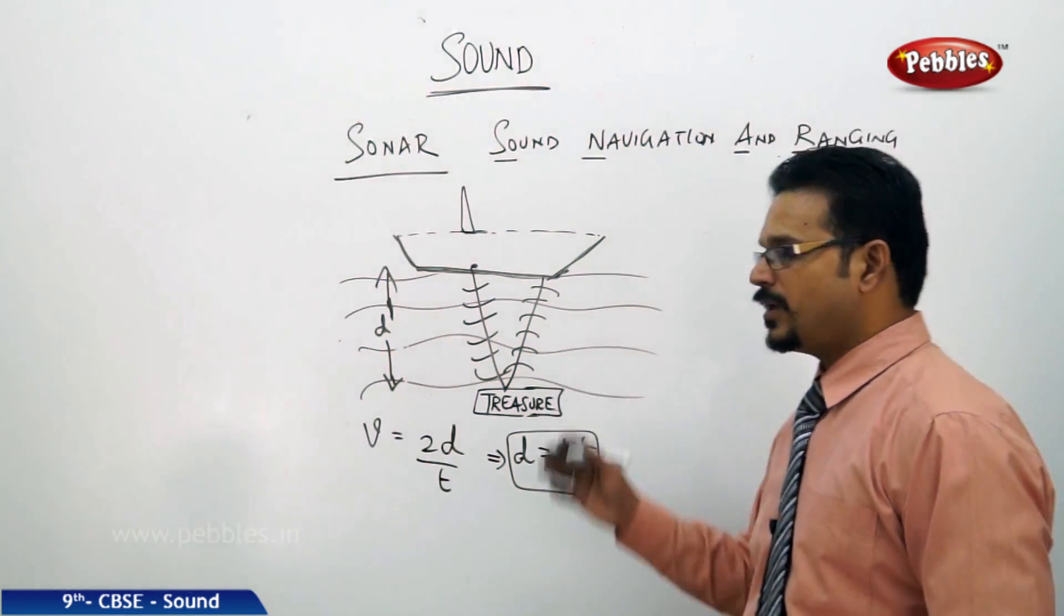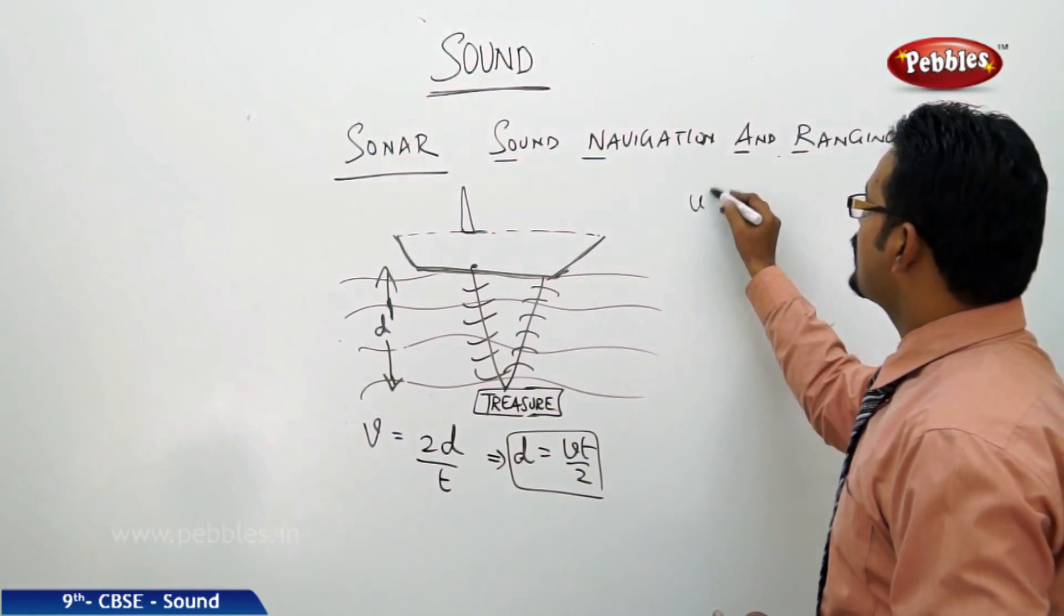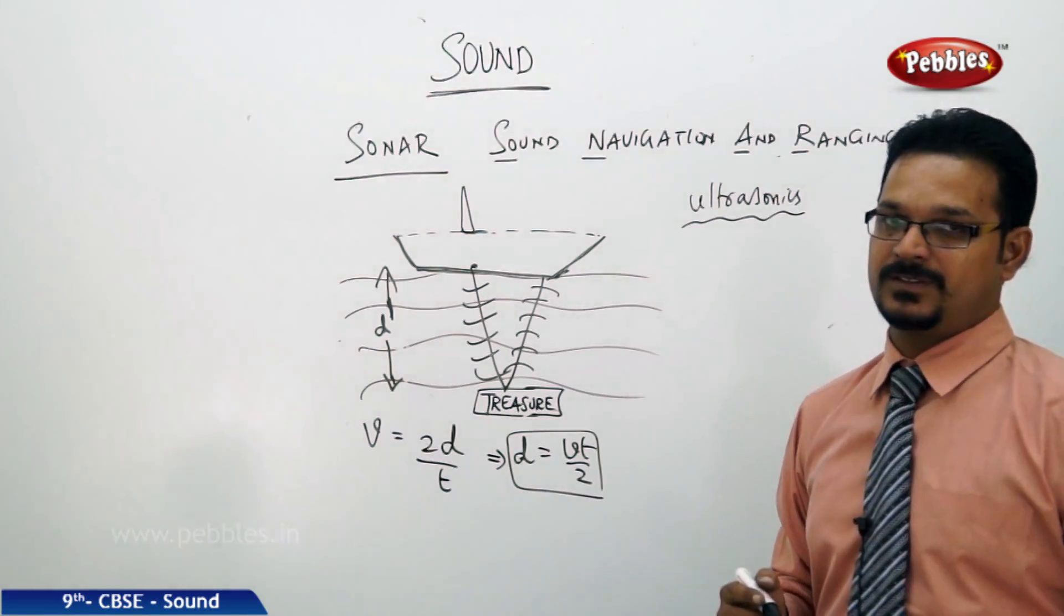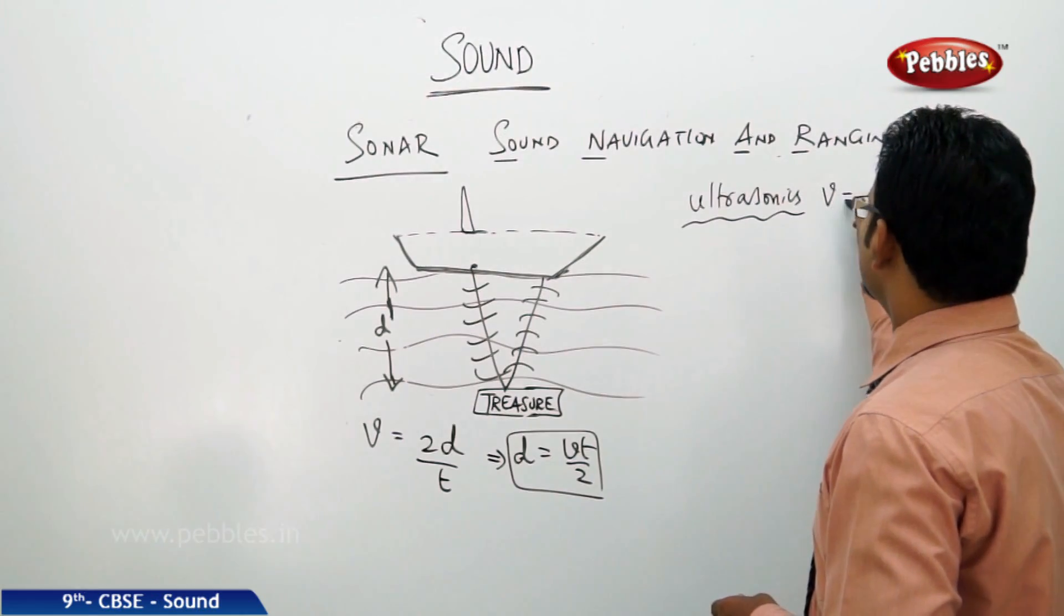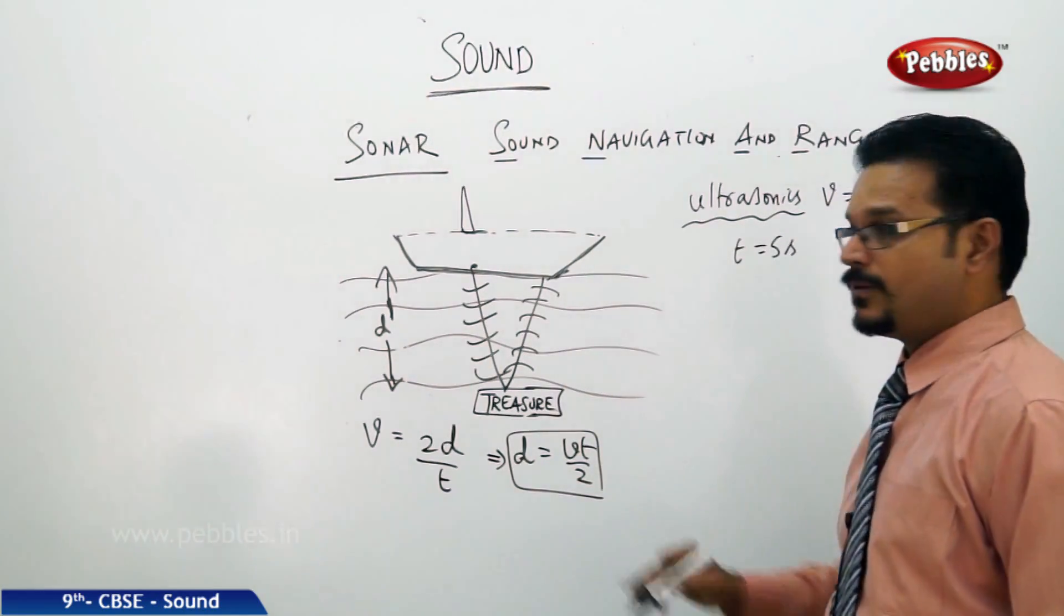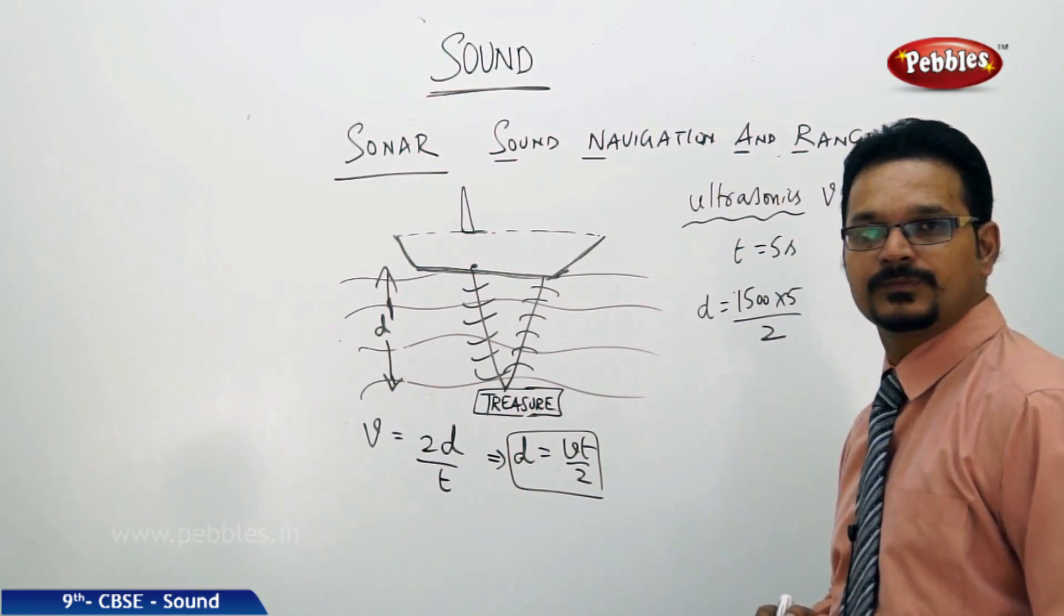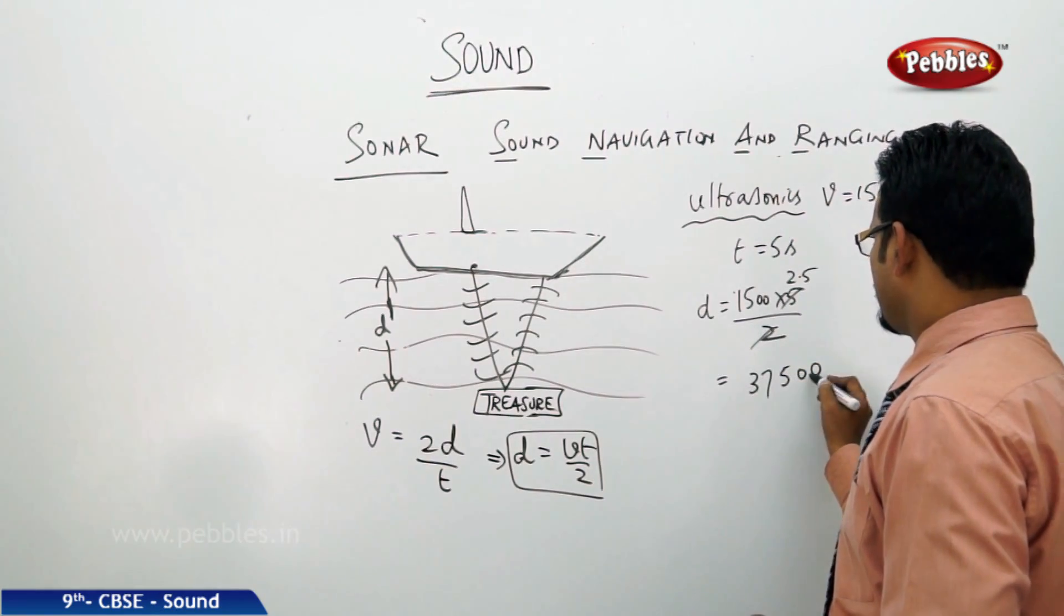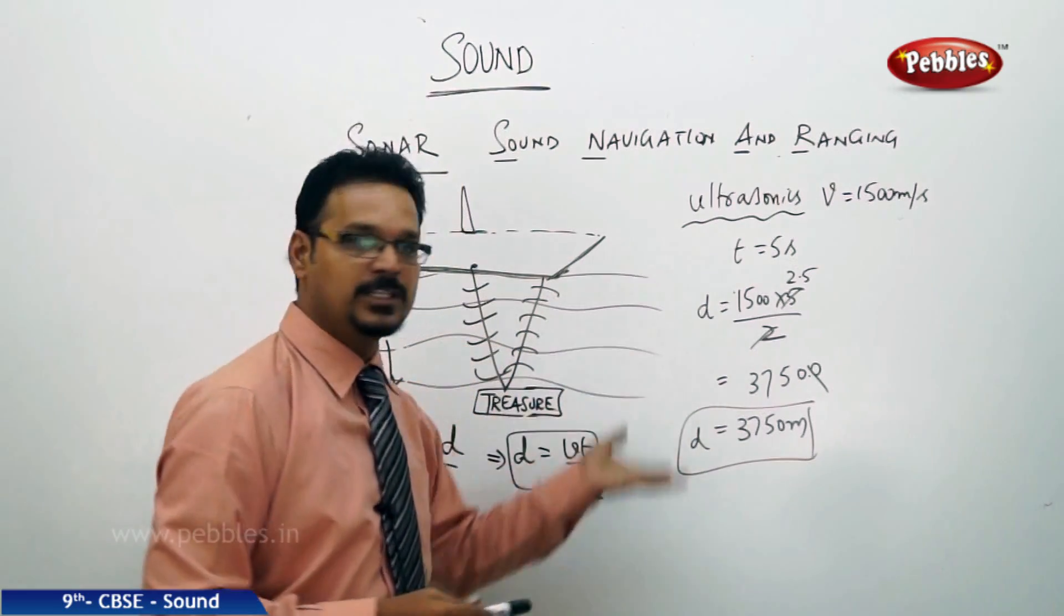In SONAR they don't use the waves that I am producing or you are producing. They use special type of waves called ultrasonics - ultrasonic waves. They send ultrasonic waves with speed, say 1500 meters per second in water. Suppose t equals 5 seconds, then the depth of the sea d equals vt by 2: 1500 into 5 by 2, which simplifies to 3750 meters. That is how the machine calculates. This is the mathematics we are using on the board, but the machine is programmed to automatically calculate and show the distance.